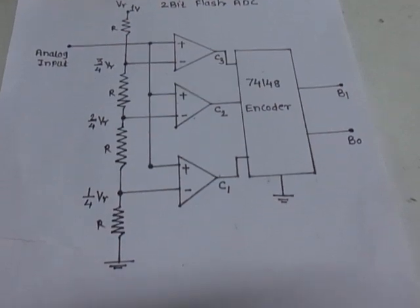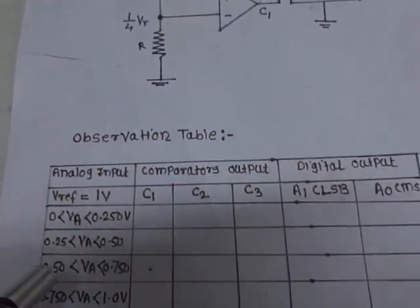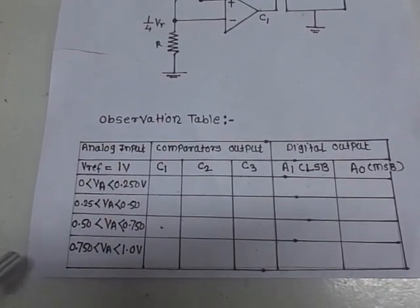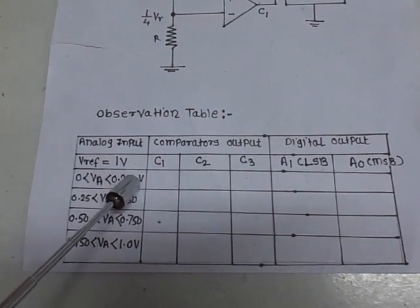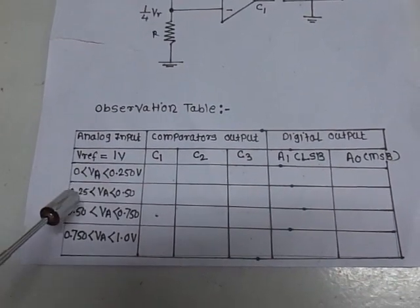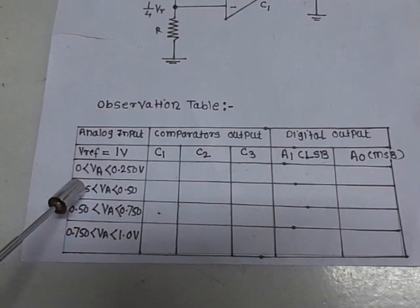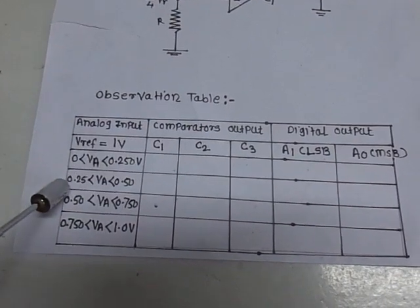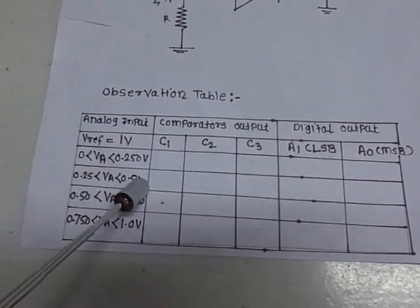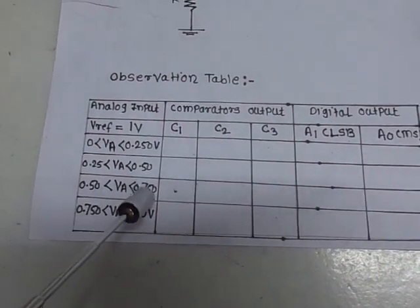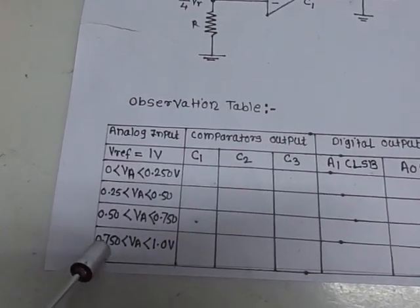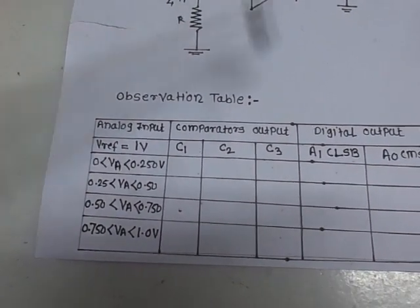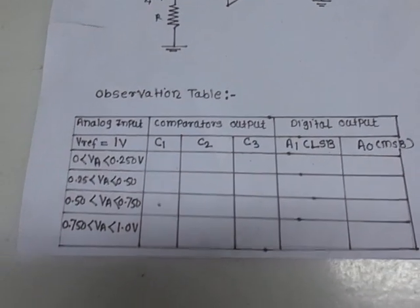The observation table is as follows. The reference voltage is 1 volt. The analog input cases are: first, greater than 0 and less than 250 mV; second, greater than 250 mV and less than 500 mV; third, greater than 500 mV and less than 750 mV; and fourth, greater than 750 mV but less than 1 volt. Correspondingly we are going to check the digital output.